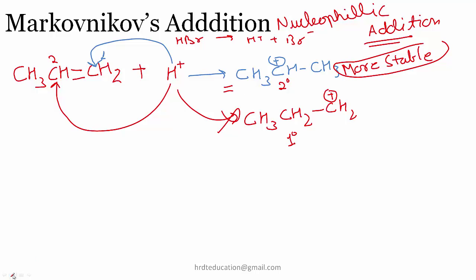Now what will happen? Next step, we have our bromide to attack. So it will attack this carbocation which is more stable, this secondary carbocation, and when bromide gets attached to the positively charged carbon we get CH3CHBrCH3.